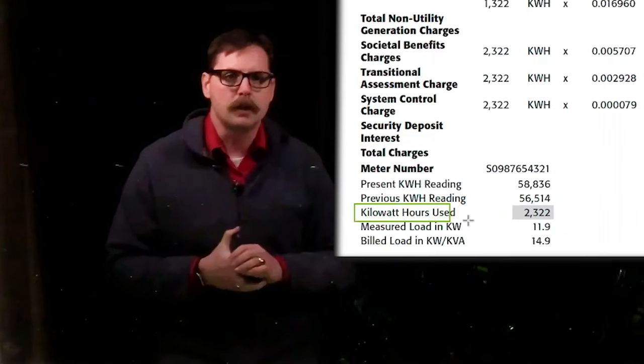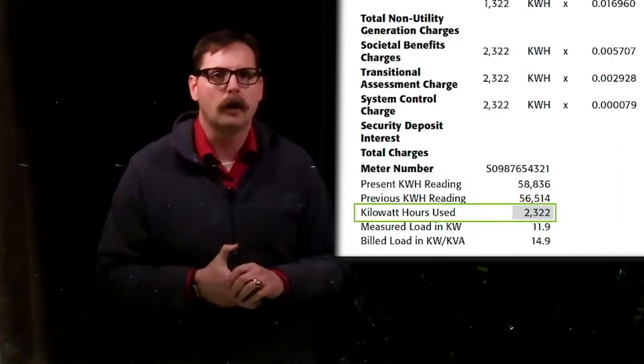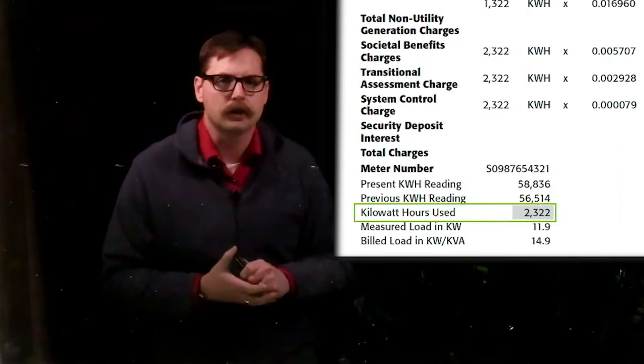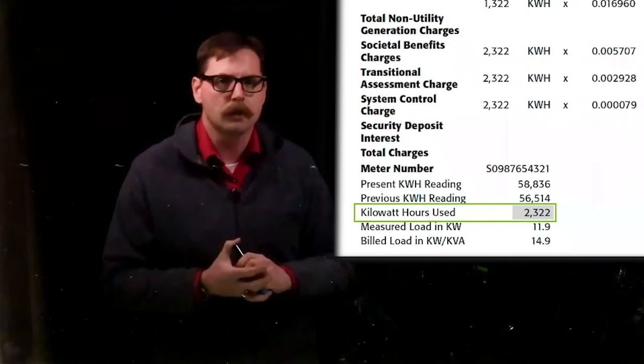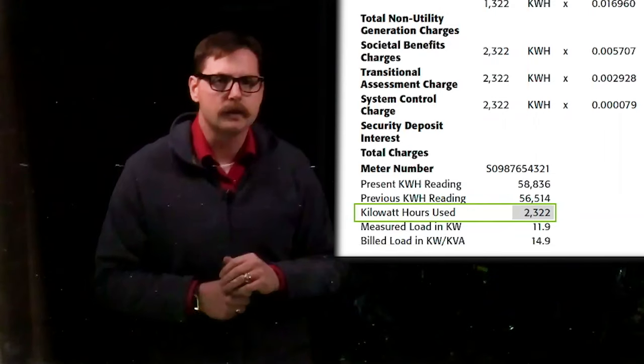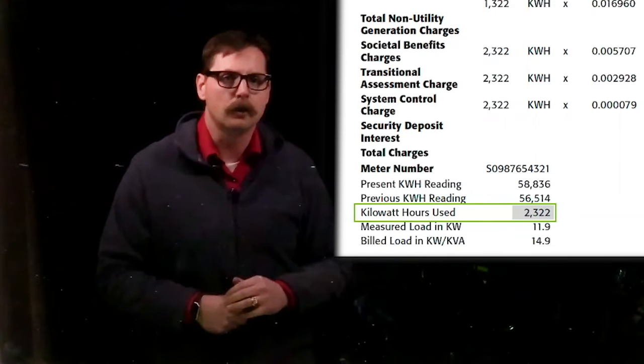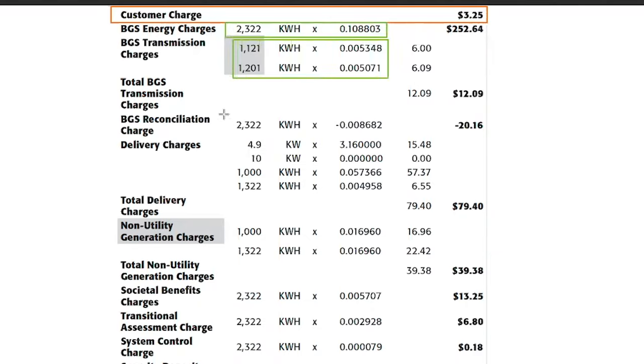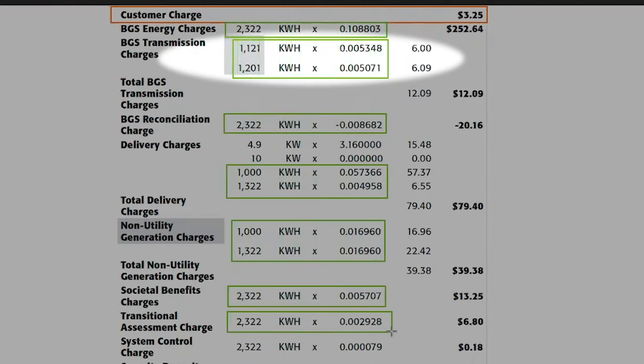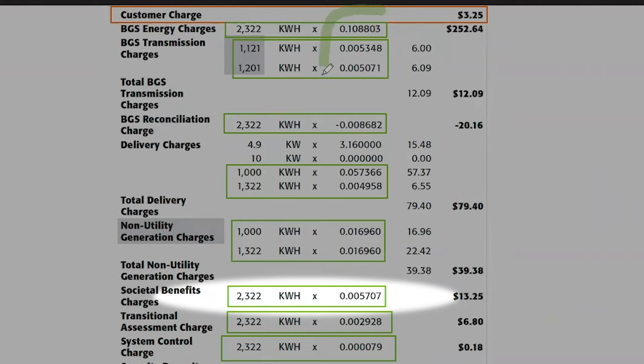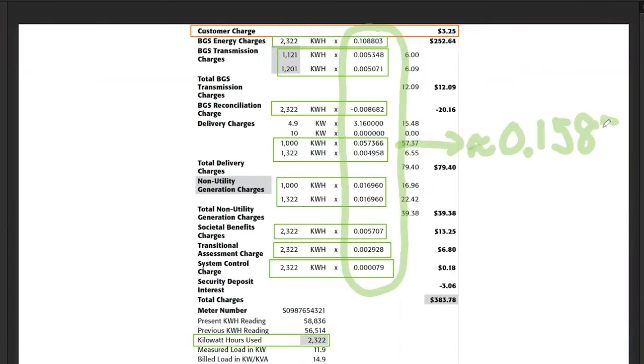If we're thinking about the next charge, which would be the usage charge, remember those are charged per kWh. So first, let's try to identify how much electricity in kWh we use during this billing period. And so if we look at this bill, it says that we use 2,322 kWh during the billing period. And then we can look down that bill and identify all of the places where we're charged per kWh. Now some of them are broken apart, maybe because they had different suppliers. If we add all those up, we get 15.85. So basically 15.85 cents per kWh is our usage charge.